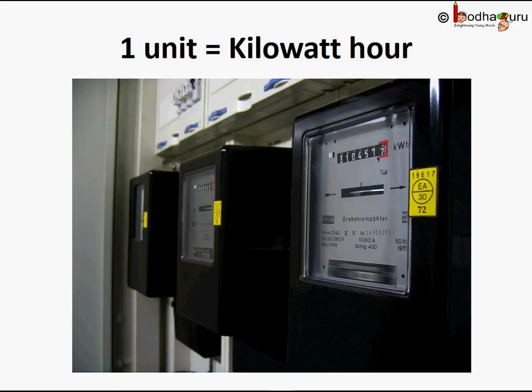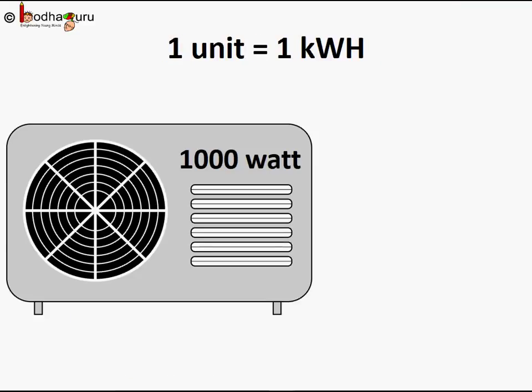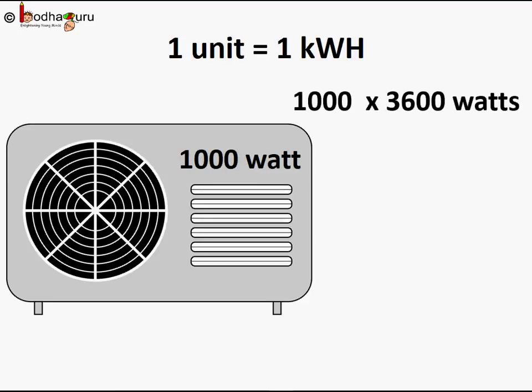If a device with one thousand watts — that is, one kilowatt — of power consumption runs for an hour, it consumes one unit of electricity, which is one kilowatt-hour. There is a cost per unit that you pay to the electricity department, and this cost varies from place to place. One unit equals one kilowatt-hour, or one thousand watts into 3600 seconds. This is the commercial unit of electricity.